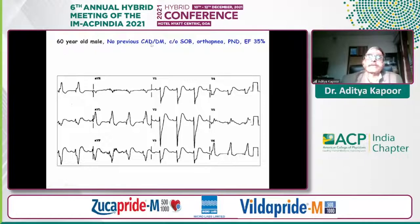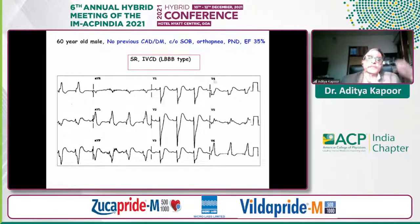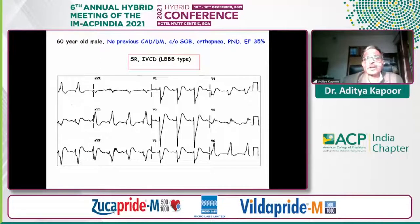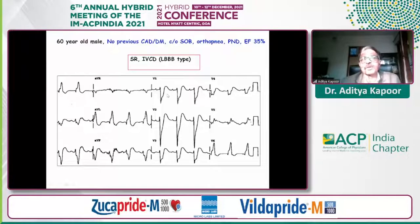Another patient with no previous history of coronary artery disease or diabetes comes with heart failure and documented low ejection fraction. The point of showing this ECG: if the ECG in a heart failure patient shows a very wide fragmented intraventricular conduction defect, you should suspect myocardial scarring. If a patient with shortness of breath has a wide QRS or fragmented QRS, you are fairly safe to diagnose left ventricular dysfunction, most probably due to dilated cardiomyopathy or ischemic heart disease.